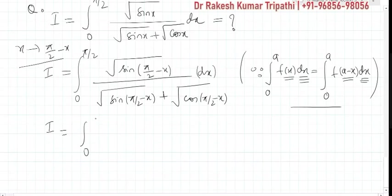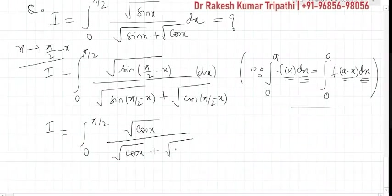Now, integral is 0 to π/2, √cos x upon √sin x + √cos x dx.